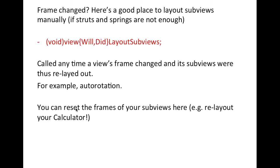If there is a layout change — like rotating the device or an orientation change — 'viewWillLayoutSubviews' or 'viewDidLayoutSubviews' is called. Inside these methods you can set your bounds, add more buttons, or make changes. Usually though, since it's all auto layout, you don't really need to call them manually.